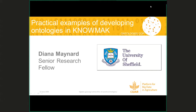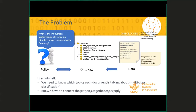Thank you. I'm going to talk at a fairly high level about some practical ways in which we've developed ontologies in a project called NOMAC. The problem here is that policy makers in Europe want to answer questions like 'what is the innovation performance of France on climate change compared with Germany?' They have all kinds of questions related to knowledge production. On the other hand, we have lots of data — publications, projects, patents, websites — all with lots of useful information. The problem is essentially how to connect these things together so that we can answer questions from the data. We need to know what topics each document is talking about, which is essentially a problem of multi-class classification.